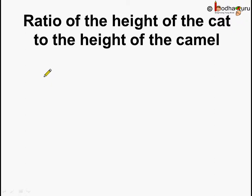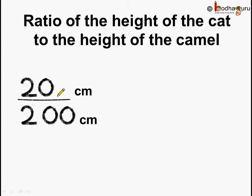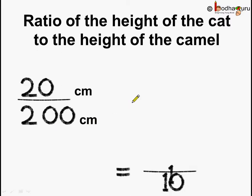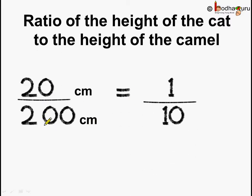Now, if we need to find the ratio of height of cat to height of camel, the height of cat is 20 centimeters and the height of camel is 200 centimeters. The units are the same — centimeters. Now, if we reduce this fraction by dividing both by 20, we get 1 by 10.